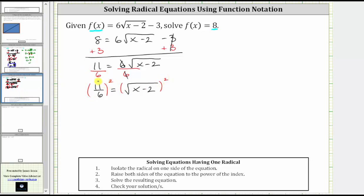On the left, the square of 11/6 is equal to 11² / 6², which is equal to 121/36. And on the right, squaring undoes the square root, and we're left with x - 2.